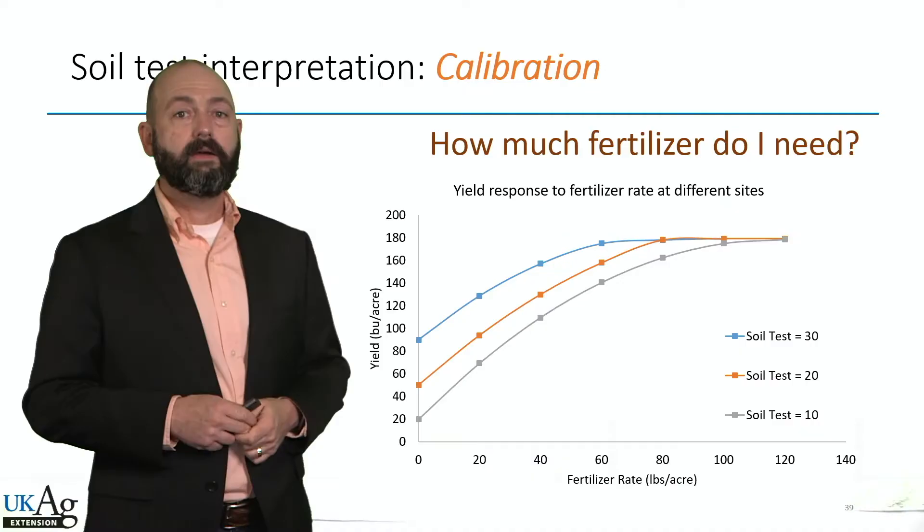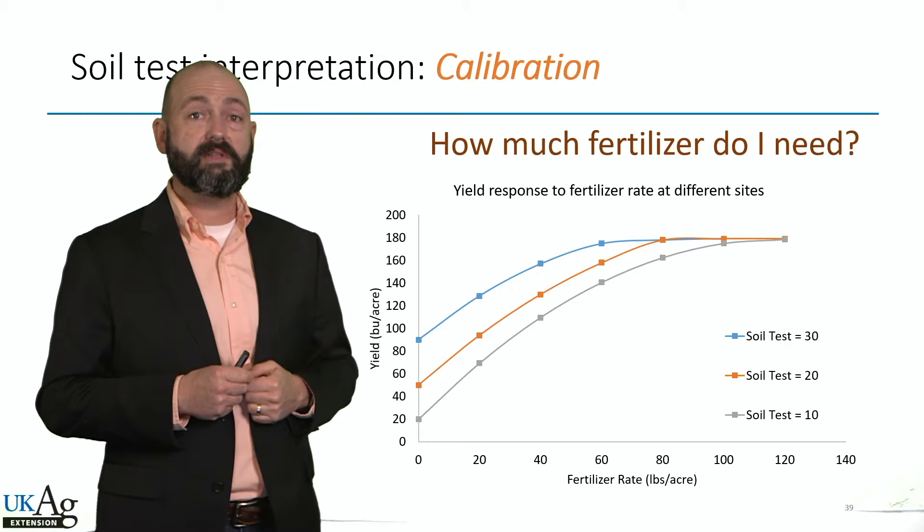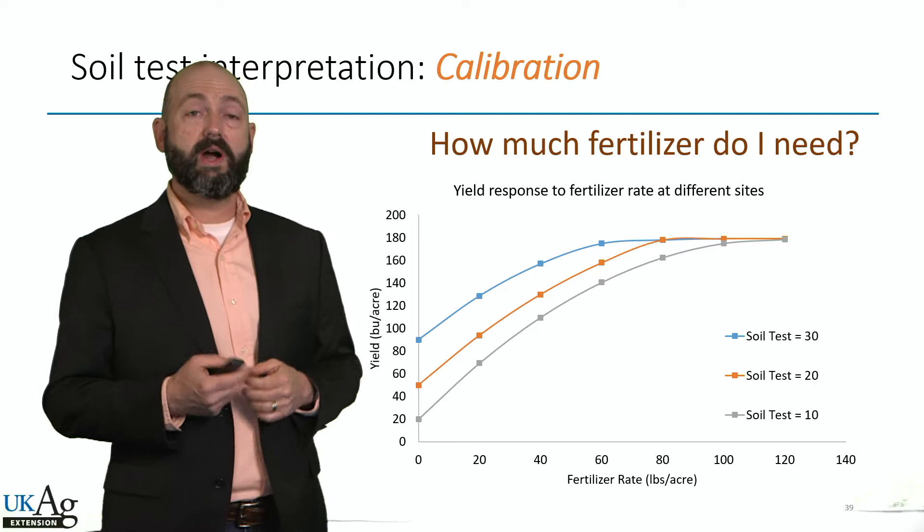So how does soil test calibration differ from correlation, which we covered in a separate presentation? Calibration asks the question: how much fertilizer do I need? Whereas correlation asks: at what soil test do I need fertilizer?